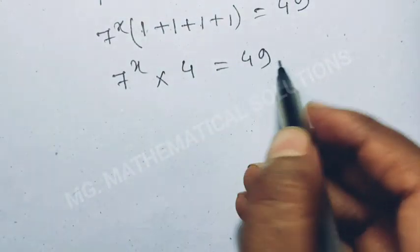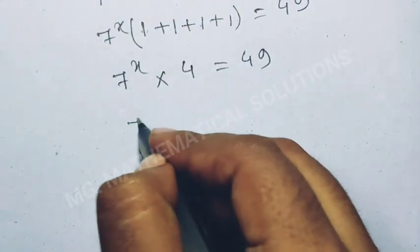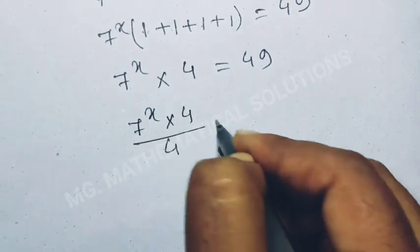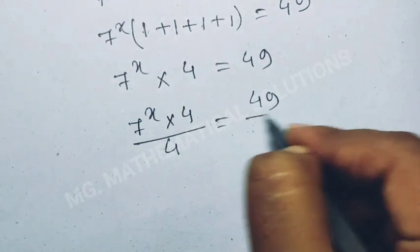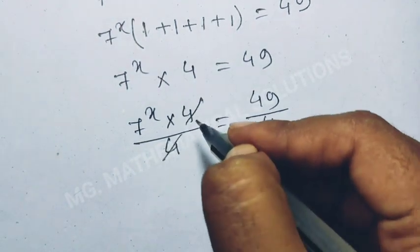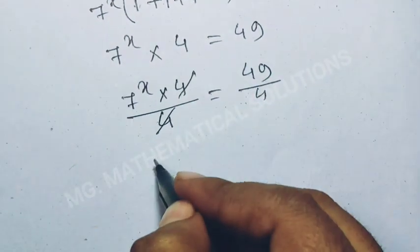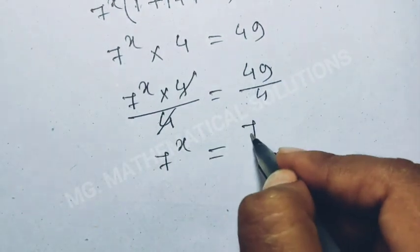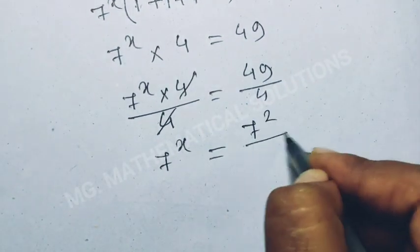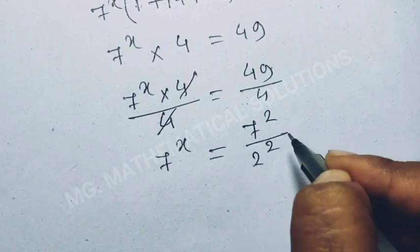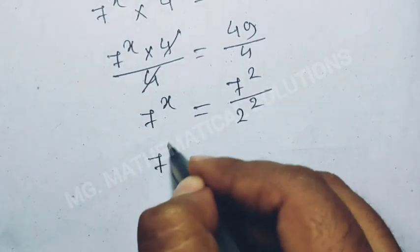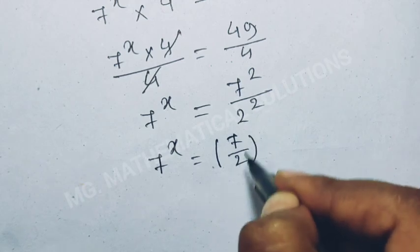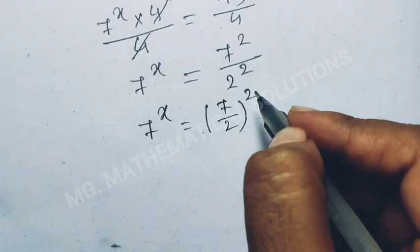We divide both sides by 4: 7 to the power x times 4 divided by 4 equal to 49 divided by 4. The 4 cancels, so 7 to the power x equal to 49 over 4, which means 7 squared over 2 squared. So 7 to the power x equal to 7 over 2, whole to the power 2.